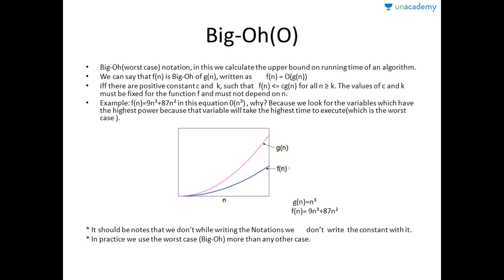We want to calculate the approximate answer, not the exact answer, therefore we always ignore constants. There is one more thing about Big O: we will use it more than any other notation because we always want to find what could be the worst that can happen, that's why we use it more.